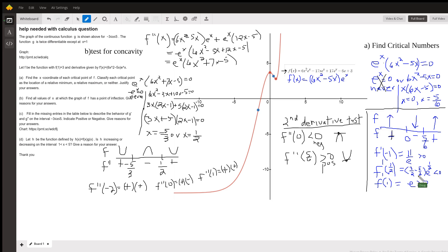If we use a test number between 0 and 5/6, like 1/2, we find out that the first derivative is negative. So the original function is decreasing. Because when the first derivative is positive, the slopes of the tangent lines are going uphill, and so is the original function. Slopes are downhill, the function is going down.